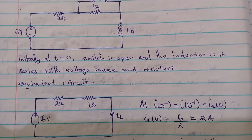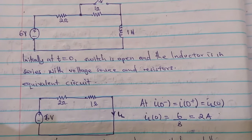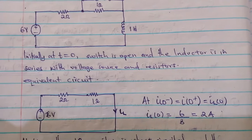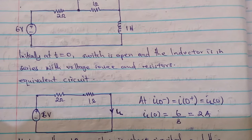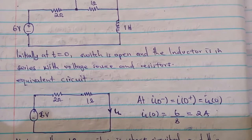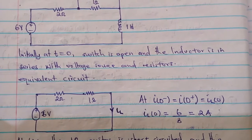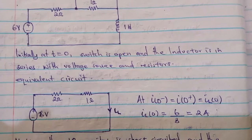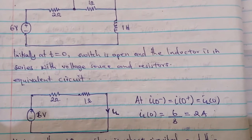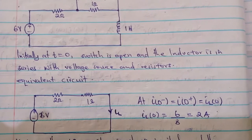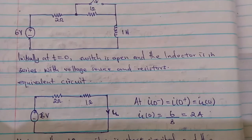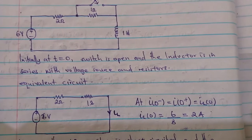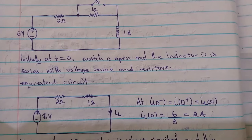Step one: when doing transient circuits, depending on the diagram given, you should analyze the circuit and the first step is to redraw it. If the circuit has storage devices such as inductors or capacitors, you replace a capacitor with an open circuit and the inductor with a short circuit. Initially at time zero, the switch is open, so the inductor remains in series with the resistors and the voltage source.